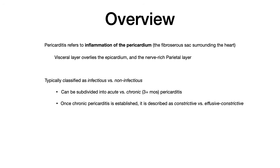Pericarditis refers to inflammation of the pericardium. The pericardium is a fibroserous sac that surrounds the heart with both protective and cardiogenic functions. It has two different layers: the parietal layer, which is rich in nerves, and the visceral layer right on top of the epicardium. Pericarditis is classified into either infectious, meaning caused by some pathogen, or non-infectious pericarditis.